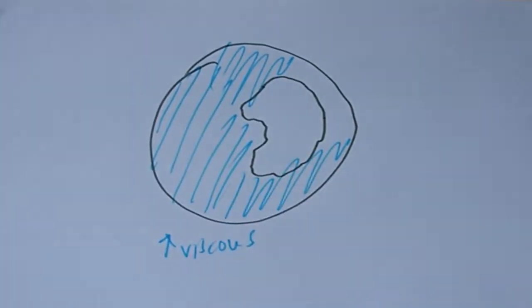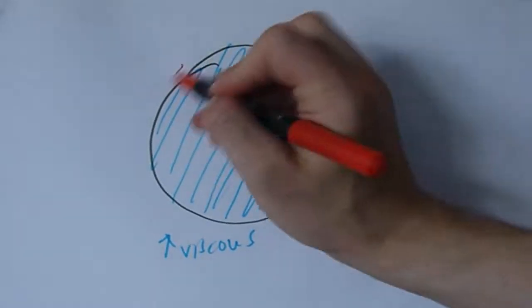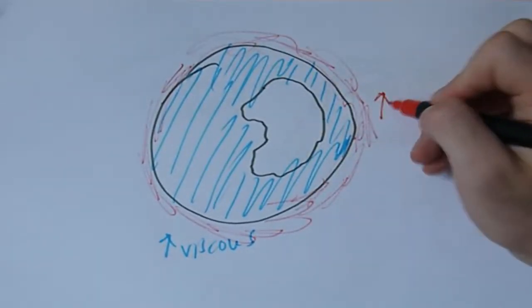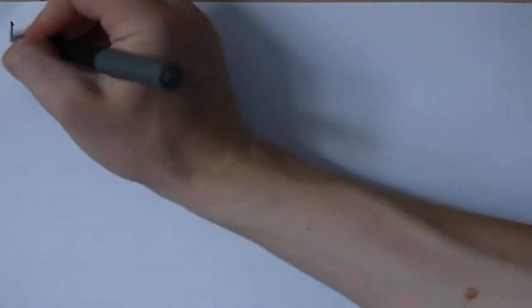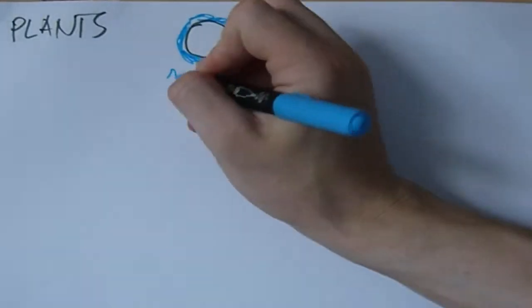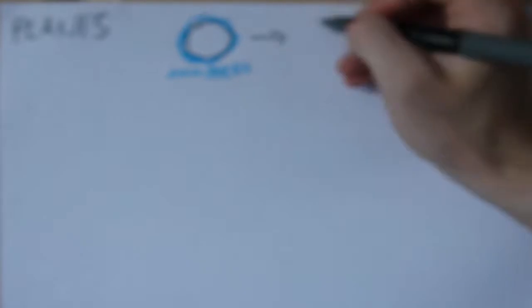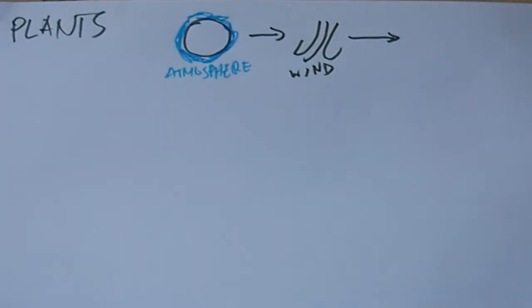What if the oceans are more or less viscous? What if the atmosphere is thicker or thinner? We can make some predictions. Let's start with plants. The thinner the atmosphere, the weaker the wind, the less robust the plants. Expect thinner stems.